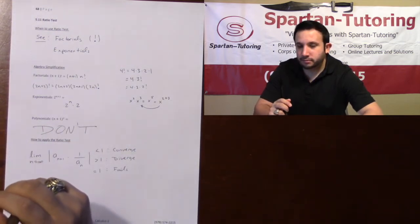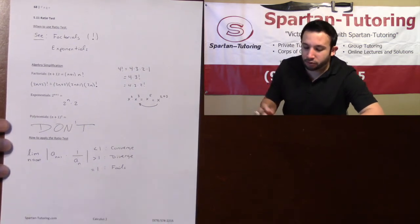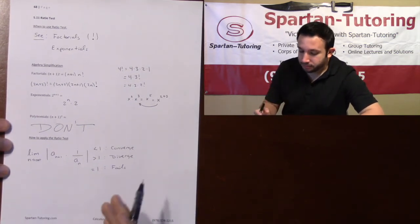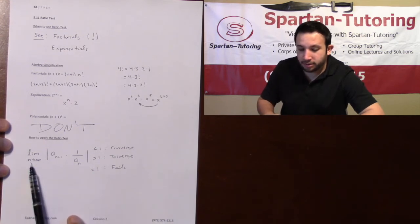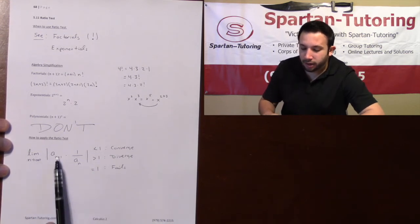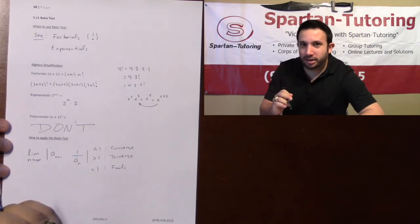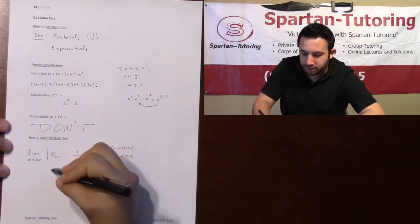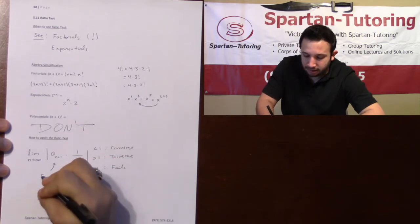So how do we apply the ratio test? The way that you apply a ratio test is you're going to take the limit as n goes to infinity of your a_n plus 1 times your a_n flipped. And I absolutely split these up. The reason I split these up is because your a_n plus 1—this is the side that you will factor.